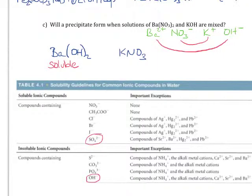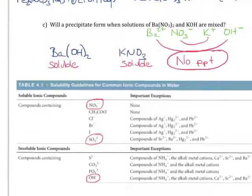For the next one, potassium nitrate, we should recognize that all nitrates are soluble, no exceptions there. So since I have two soluble compounds, that means that no precipitate will form, and PPT is just an abbreviation for precipitate.